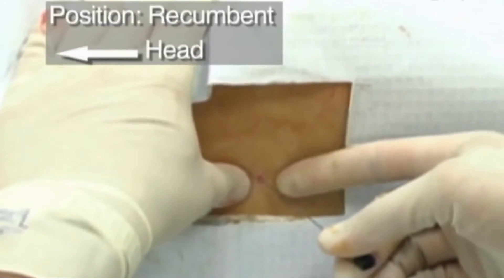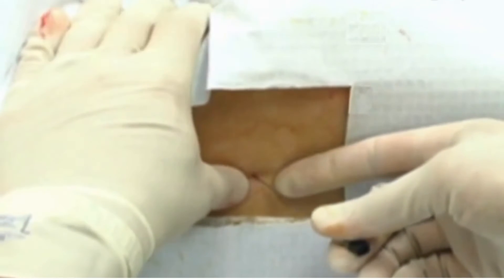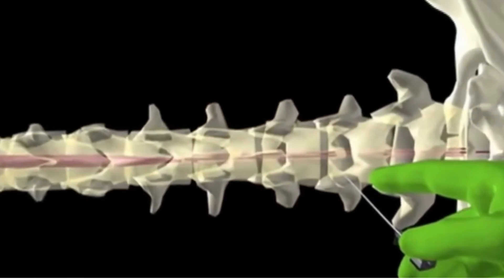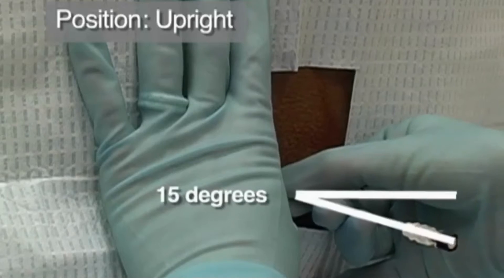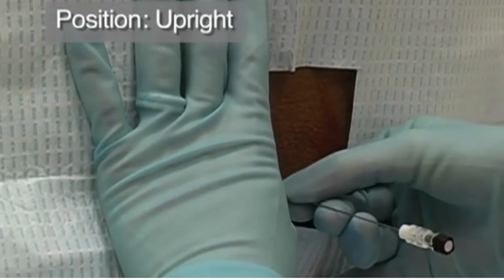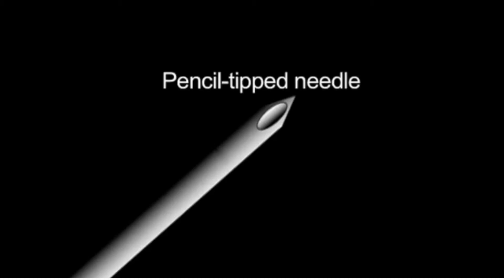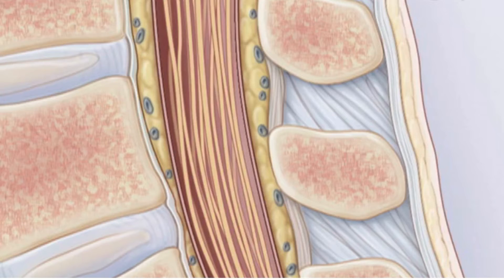Identify the anatomical landmarks once again and insert the needle with stylet firmly in place, in the midline at the superior aspect of the inferior spinous process, directing it at an angle of approximately 15 degrees, as if aiming at the patient's umbilicus. Either use a pencil-tip needle or ensure that the bevel of the needle is in the sagittal plane so as to spread rather than cut the fibers of the dural sac. These fibers run parallel to the spinal axis, and this needle position should theoretically decrease the leakage of cerebrospinal fluid.